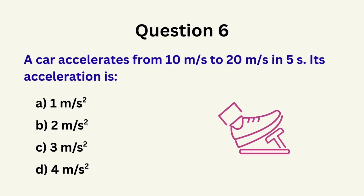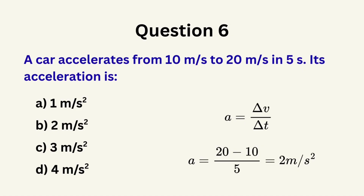Question 6: A car accelerates from 10 meters per second to 20 meters per second in 5 seconds. Its acceleration is... A. 1 m/s², B. 2 m/s², C. 3 m/s², D. 4 m/s². The correct answer is B: 2 meters per second squared.